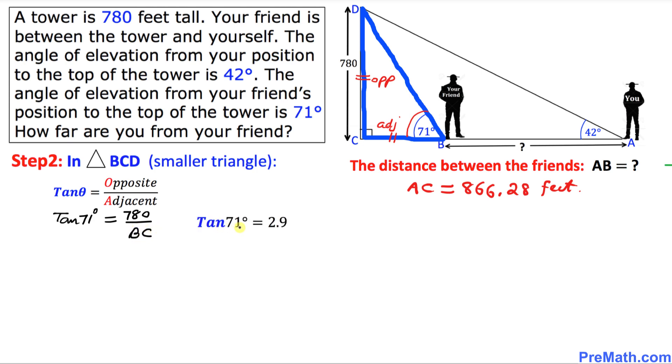And we know that tangent of 71 degrees equal to 2.9. So I'm going to replace this one by 2.9 equal to 780 divided by BC. Here I'm going to put a 1 underneath this number and let's cross multiply. So once we cross multiply we are going to get 2.9 BC equal to 1 times 780 is going to give us 780.